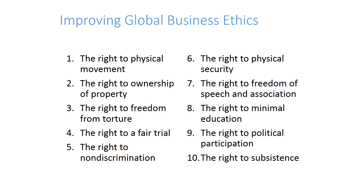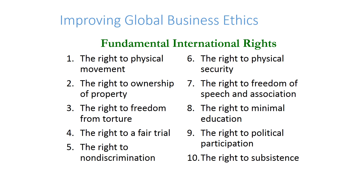One fundamental question is how to improve global business ethics. The starting point is to respect the fundamental international rights of employees and people. These include: the right to physical movement, the right to ownership of property, the right to freedom from torture, the right to a fair trial, the right to non-discrimination, the right to physical security, the right to freedom of speech and association, the right to minimal education, the right to political participation, and the right to subsistence. If companies and countries take the right actions to ensure these rights are protected, it will be a big step toward achieving global business ethics, because the bottom line of ethics is human values and human rights.